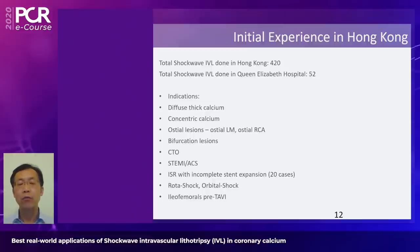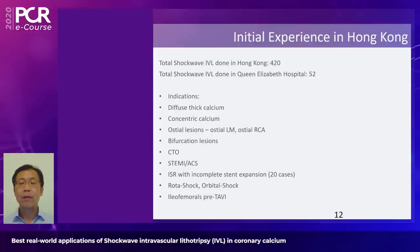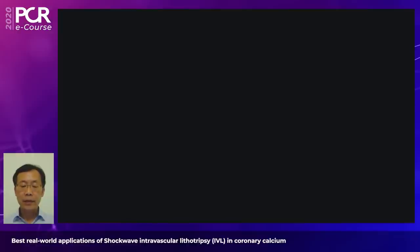We were greatly honored to perform the first shockwave lithotripsy case in Asia at our hospital last year on May 8th — and it was already a left main case. Up to now in Hong Kong, we've done 420 shockwave cases; in my hospital, over 50 cases. We've treated all complex anatomies: diffuse thick calcium, concentric calcium, ostial lesions including ostial left main and ostial LCA, bifurcation lesions, CTO, and even ACS STEMI when nothing could cross. We've also used combination therapy with rotablation (roto-shock) and orbital atherectomy (orbital-shock), and even peripheral shockwave balloons to facilitate TAVI procedures via calcified iliofemoral arteries.